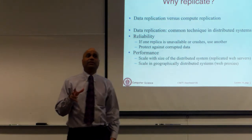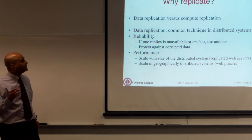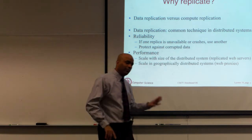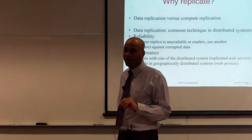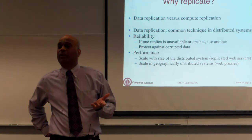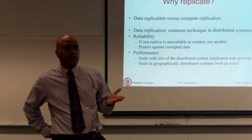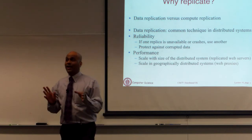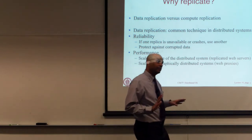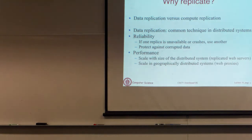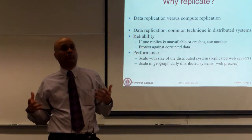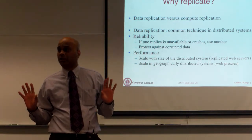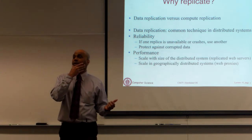Let me start with replication, which is the basis for why we need consistency at all. We talked about replication in the very first class — replication, transparency, and so on. So why would you need to replicate either data or computation in your distributed application? In lab two, you are already replicating computation. Your front end servers are being replicated. The computation in your case is straightforward: you can retrieve scores and update scores, but it's some form of computation.